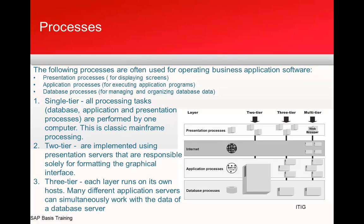Below the internet layer is the application process, where the SAP business logic runs. Below that are the database processes. In a single-tier architecture, all these processes run on one single system. In a two-tier architecture, the presentation layer is separate and the rest runs on one single system.